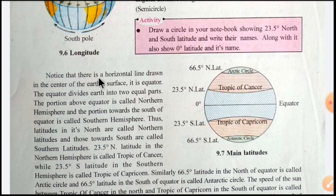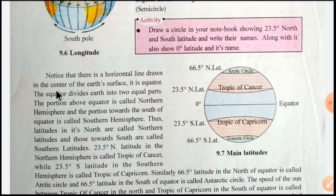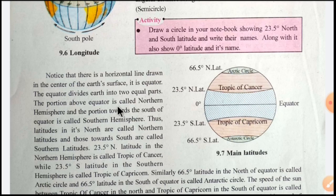Notice that there is a horizontal line drawn in the centre of the Earth's surface — that is the equator. The horizontal, meaning a flat line, drawn in the middle is called the equator. The equator divides the Earth into two equal parts. This middle line makes exactly two equal parts of the Earth.